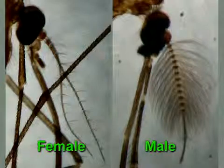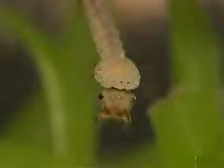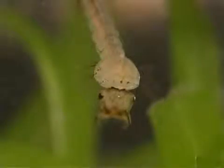Male adult mosquitoes have short mouth parts and eat plant nectar. Males do not feed on blood. Mosquito larvae are filter feeders — they strain small particles of organic matter, such as bacteria and other microorganisms, from the water.